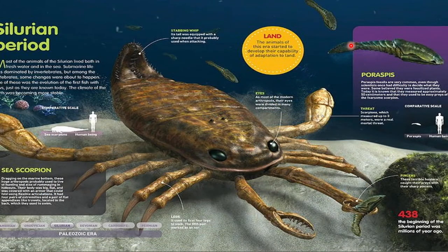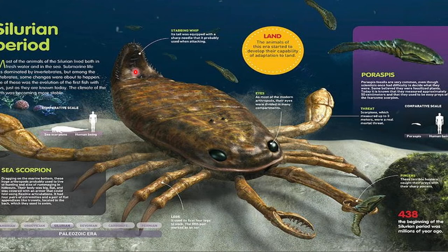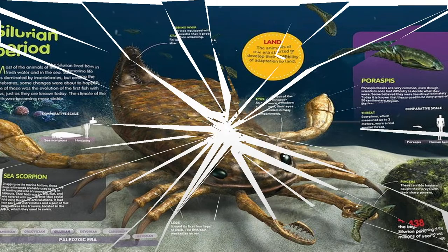Poraspis was comparatively very small compared to a human. The Jaekelopterus was very strong — you can see the pincers which were very strong and essential to cut through the bony plates of the Poraspis fish. The Silurian covered the least amount of time and didn't introduce many new things beyond the corals and bryozoans of the last period, just some new creatures.